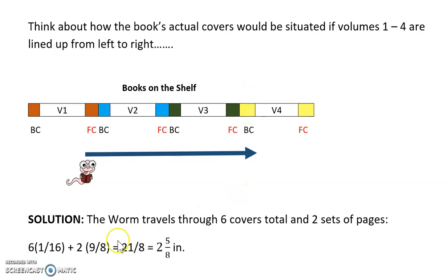So in total, this worm has gone through six covers that are one sixteenth inches, and then two sets of pages that are one and one eighth or nine eighths inches. So he's traveled through a total of 21 eighths or two and five eighths inches altogether. And that is the solution to the hungry bookworm problem.